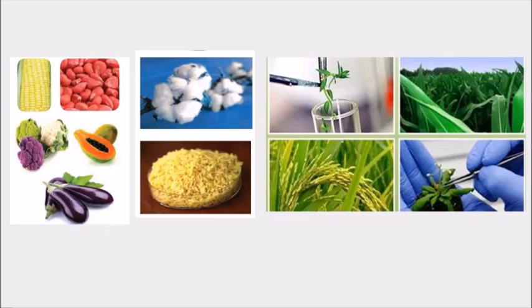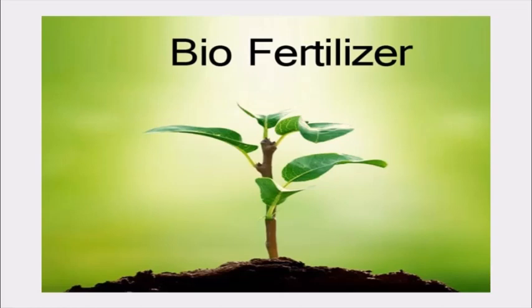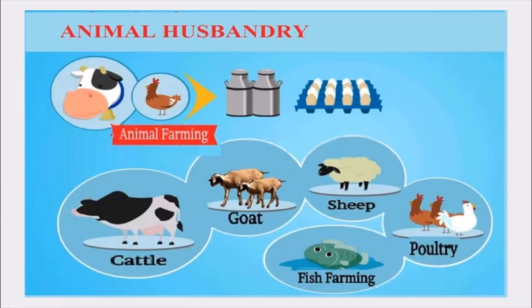Similarly, we have golden rice and herbicide-tolerant plants. With bio-fertilizers, instead of chemical fertilizers, the nitrogen fixation and phosphate solubility abilities of the plant improve. Organisms used include bacteria like Rhizobium, Azotobacter, Nostoc, and Anabaena, and even the plant Azolla. These bio-fertilizers do not harm the soil or the environment, making them environment-friendly.